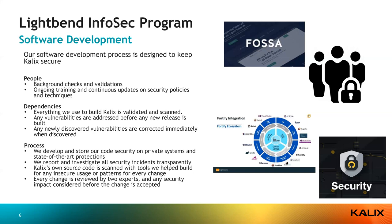Our process is very secure. We develop and store our code on secure systems with state-of-the-art protections. We report and investigate all security incidents transparently so customers know exactly what we've done and how we'll prevent recurrence. Calyx's own source code is scanned with tools we helped build — specifically a tool called Fortify, and we built a Scala plugin that finds patterns representing potential security holes. Every change is reviewed by two of our team, so it's not possible for one person to make a mistake that goes unnoticed before it reaches the product.